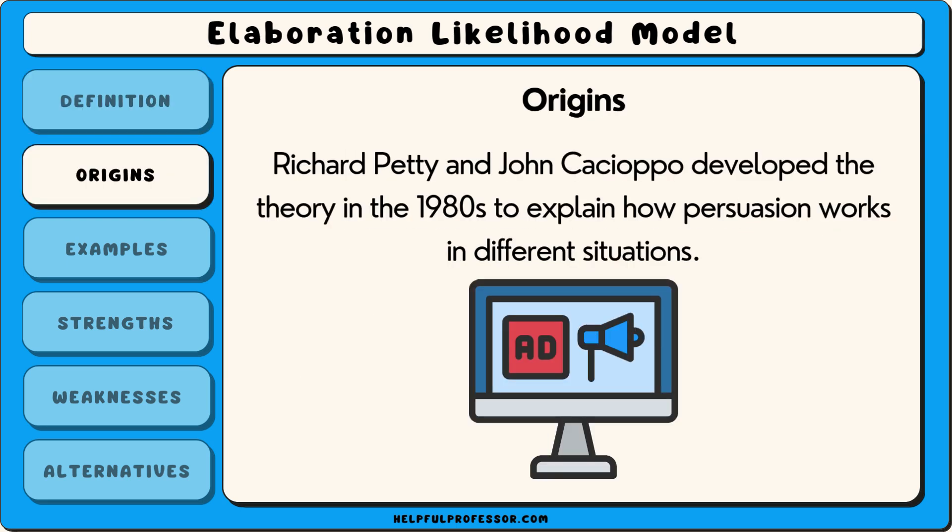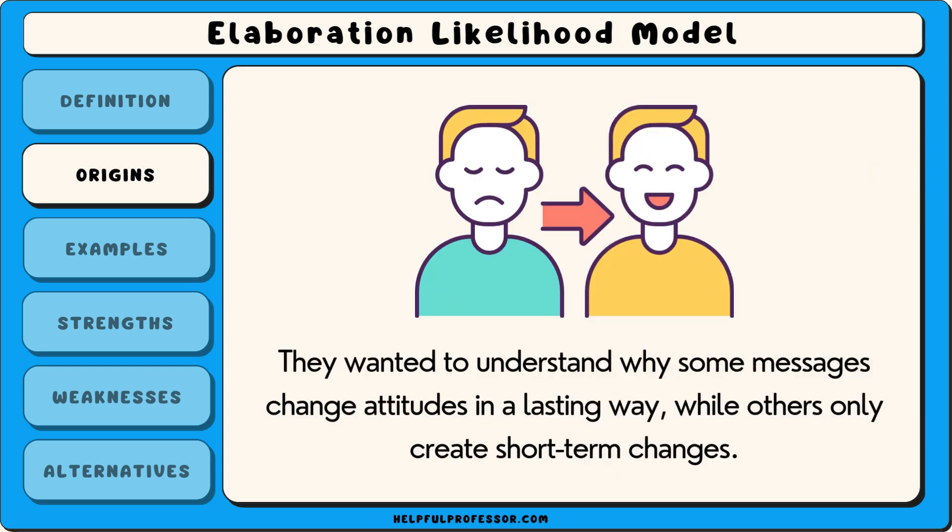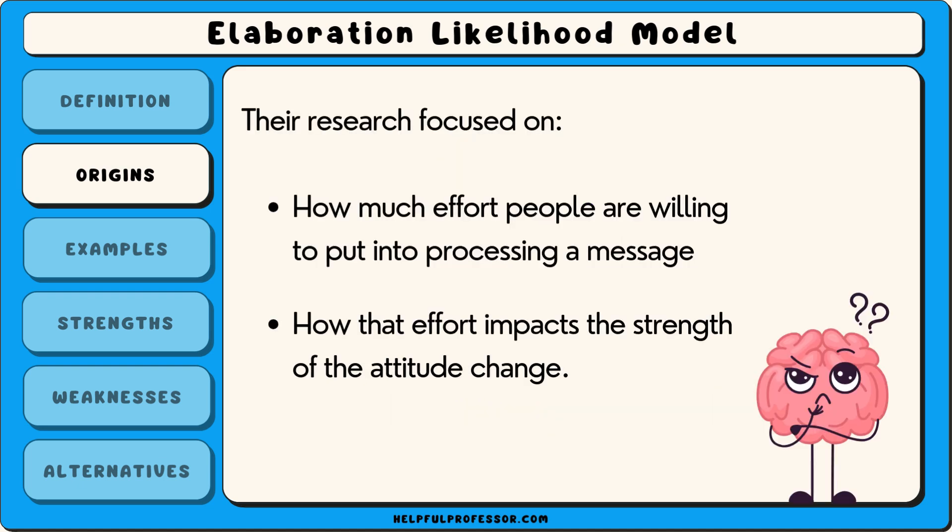The origins of the elaboration likelihood model can be traced back to the 1980s, when psychologists Richard Petty and John Cacioppo developed a theory to explain how persuasion works in different situations. They wanted to understand why some messages change attitudes in a lasting way, while others only create short-term changes. Their research focused on how much effort people are willing to put into processing a message and how that effort impacts the strength of the attitude change.